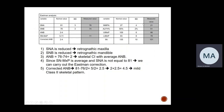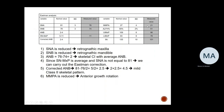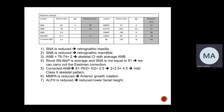The maxillo-mandibular plane angle for Andrew is 21, which is much less than normal — indicating anterior growth rotation. The anterior lower facial height is 51, compared to the normal of 55, indicating reduced lower facial height. The upper incisors to maxillary plane angle is 98, compared to the normal of 109 — meaning retroclined upper incisors. The lower incisors are 78, well below the normal of 93, meaning retroclined lower incisors. Both upper and lower incisors are retroclined, which is typical in classical Class II Division 2 malocclusion.